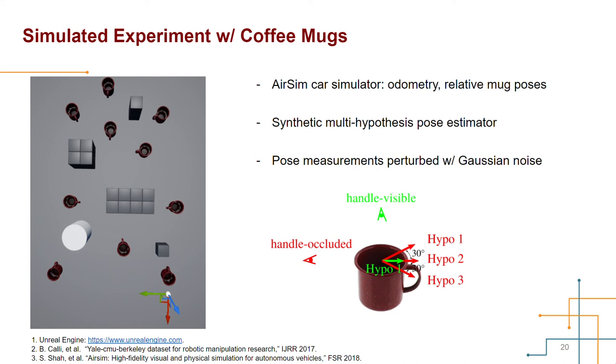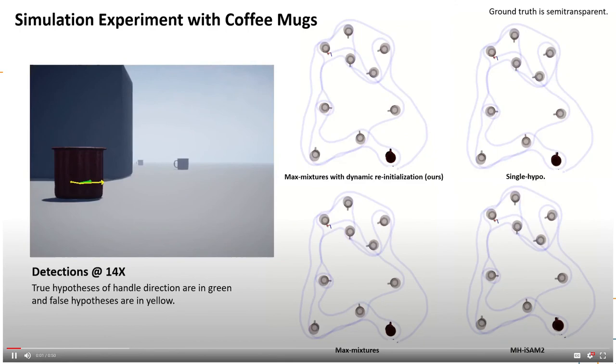We made a synthetic multi-hypothesis pose estimator based on the viewpoint. If the mug handle is occluded, there will be three pose hypotheses in the measurements. Otherwise, there is only one possible pose. And all the pose measurements are perturbed with a normally distributed noise.